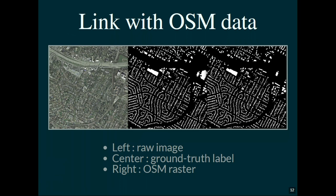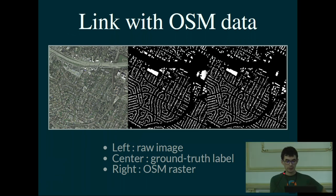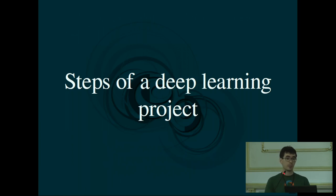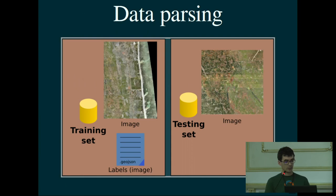On the left you have a typical INRIA image, in the middle the label provided by INRIA, and on the right the version we produced ourselves. The buildings are not necessarily equivalent because there is probably additional work on OpenStreetMap tags to recover the exact footprints. Now let's talk about the data pipeline steps — when designing a proof of concept in this topic, we have to consider some classical steps, the first being data parsing.